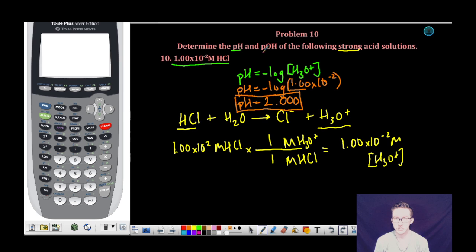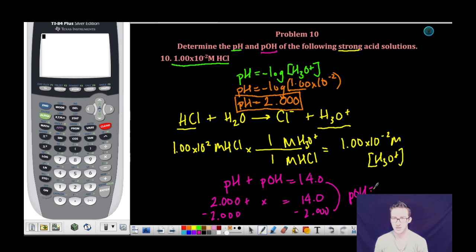Okay, and the last thing we want to do here is solve for the POH. It's pretty easy to do once you have the pH. Remember, the relationship between pH and POH is the following. The sum of those two values will equal 14. And since I know that the pH is 2.000 and I'm looking for the POH, I simply subtract 2 from each side, which means that the POH in this solution is going to be 12.000.